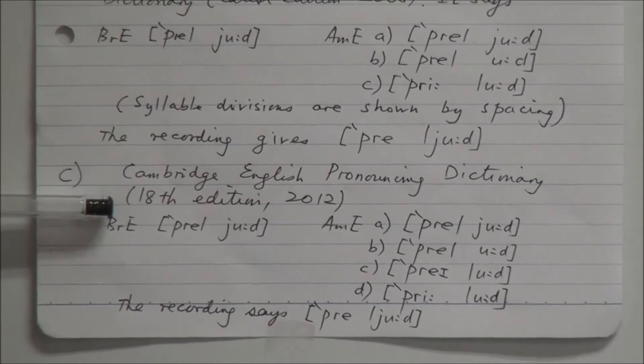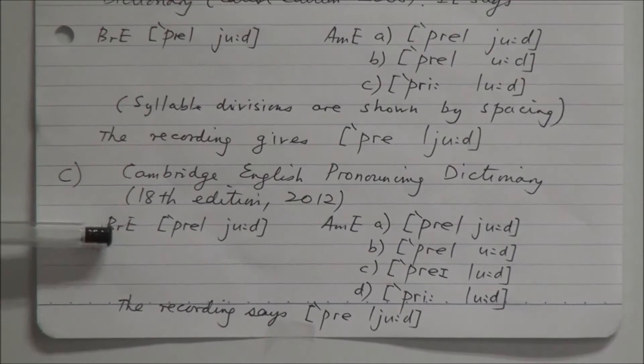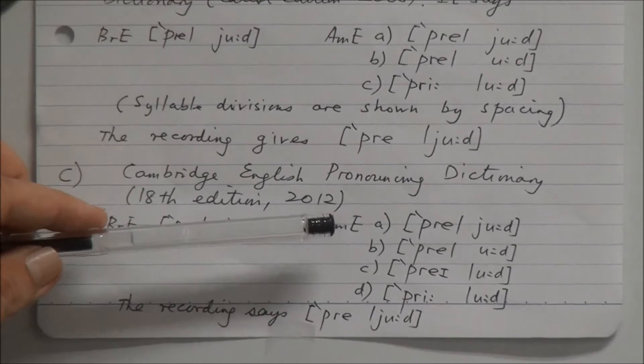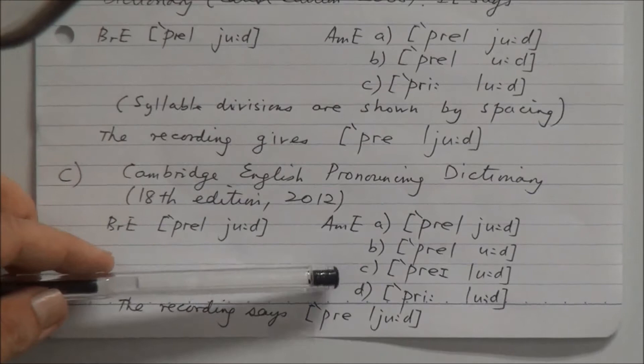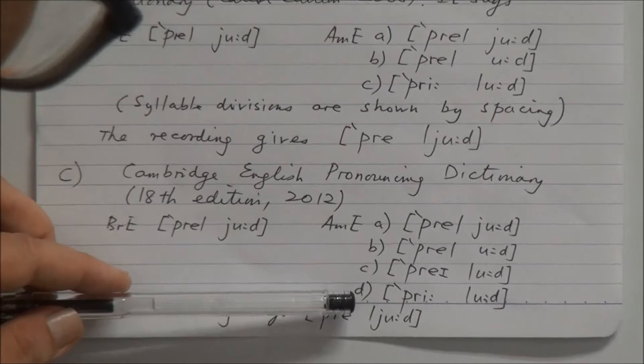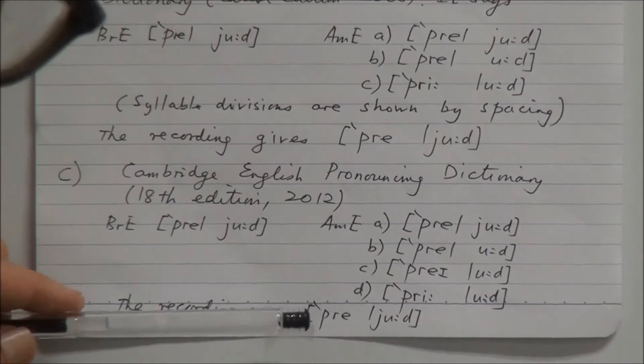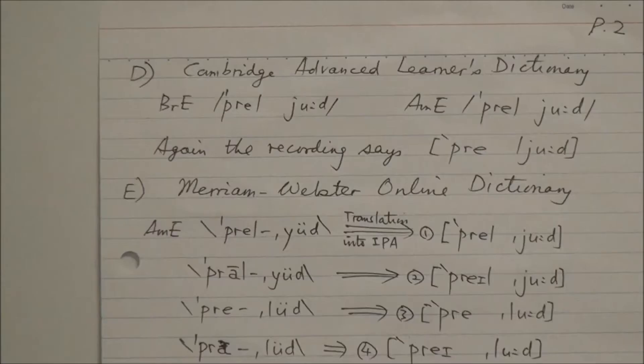Next is Cambridge English, which provides a transcription for British English and multiple American English variants — options A, B, C, and D. Of course, all of them differ from the recording.